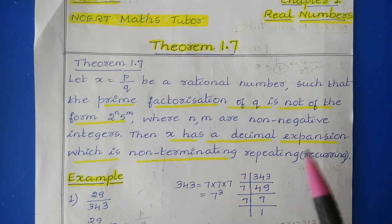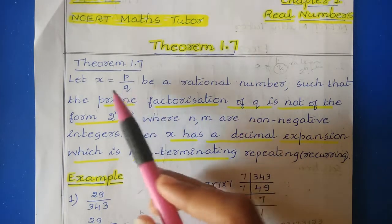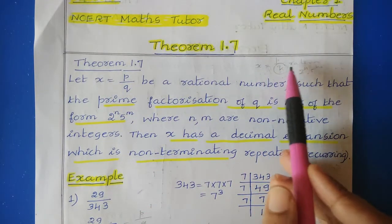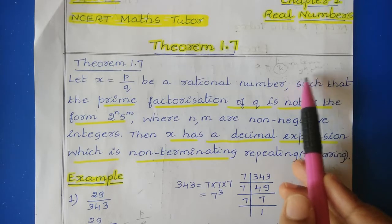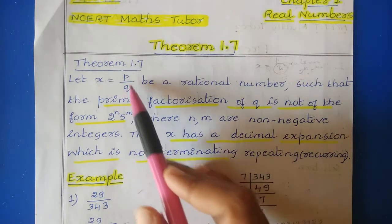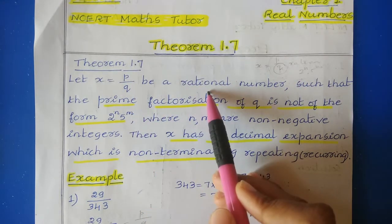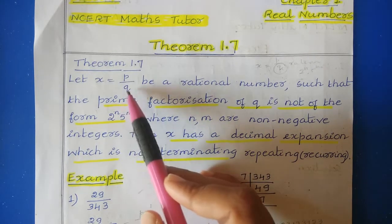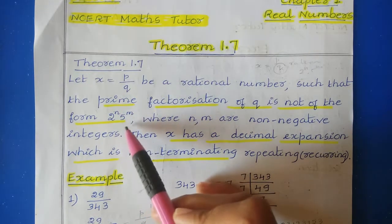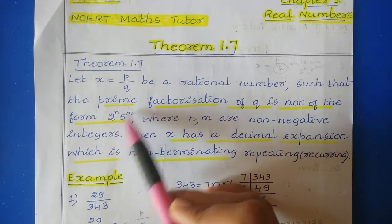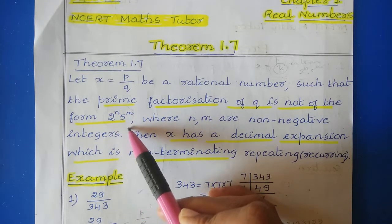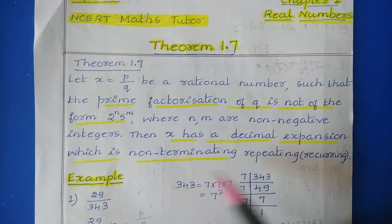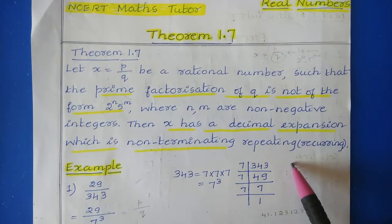So here, they are talking about one number x, where x is equal to p by q, which is a rational number. We know that all rational numbers are of the form p by q, where the prime factorization of the denominator q is not in the form 2 to the power n into 5 to the power m. Then we can say that x has a decimal expansion which is non-terminating repeating.